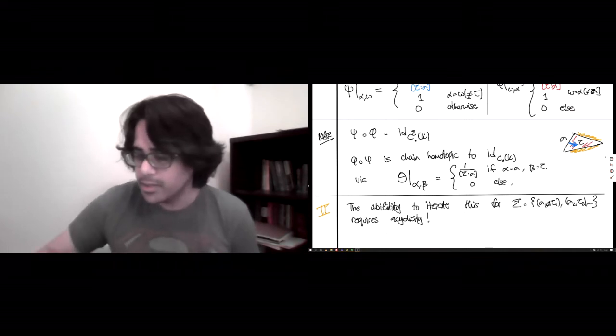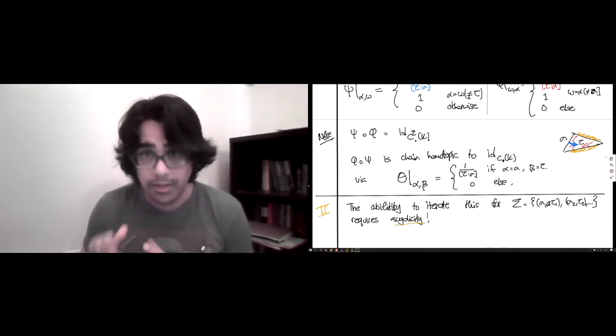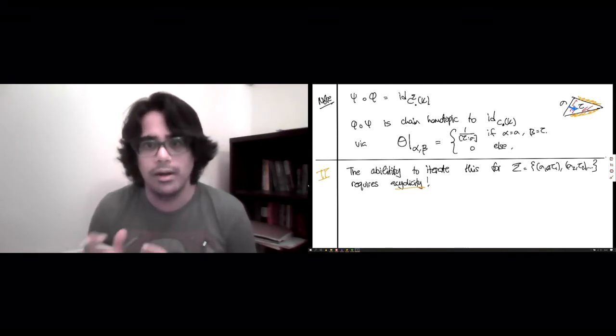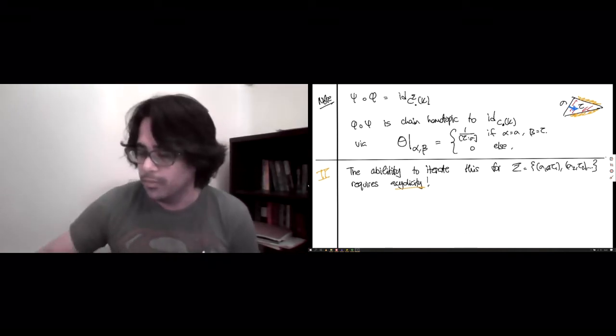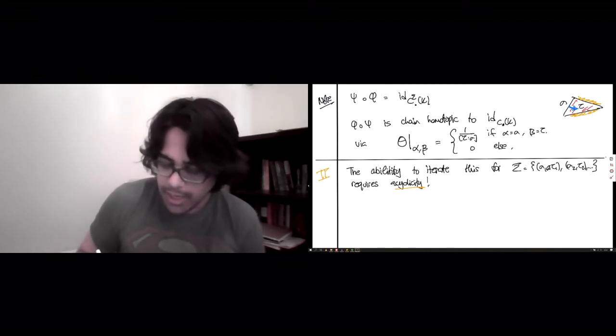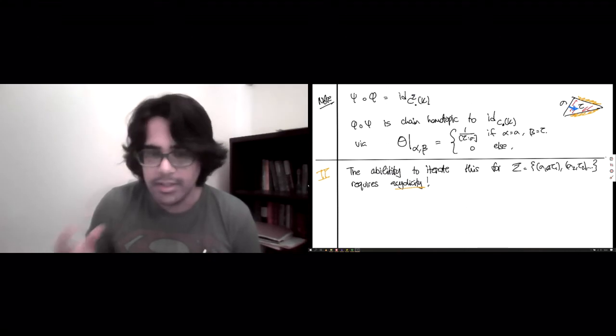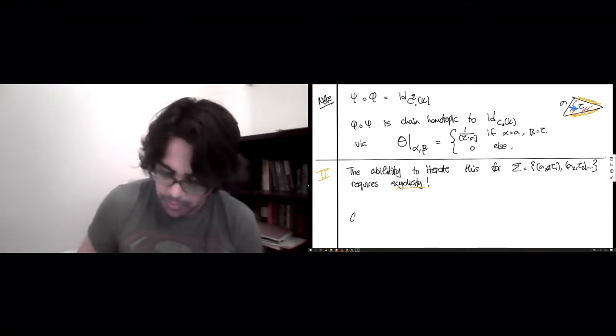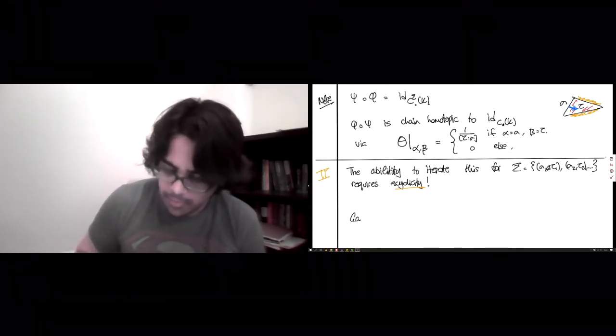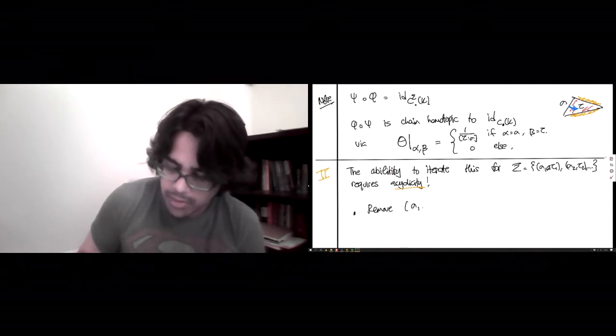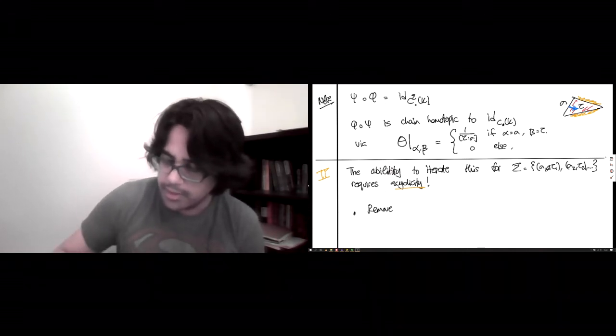And, this is why we are not doing this for arbitrary partial matchings, but rather acyclic partial matchings. And, I just want to tell you where the acyclicity plays a role. The acyclicity plays a role by guaranteeing that if you remove sigma 1, tau 1, using this process,